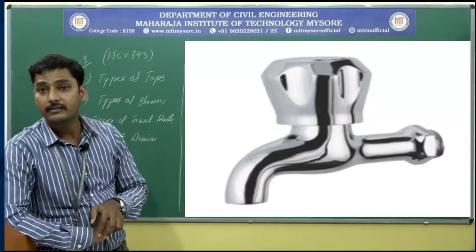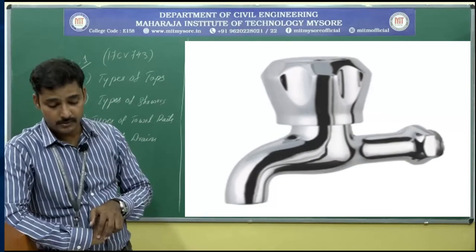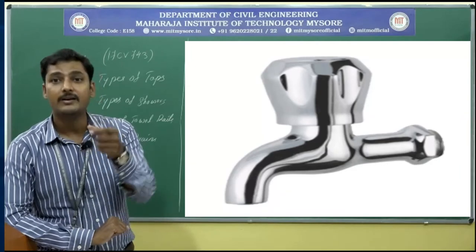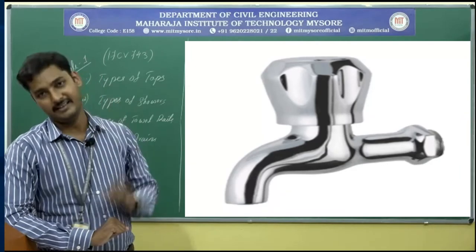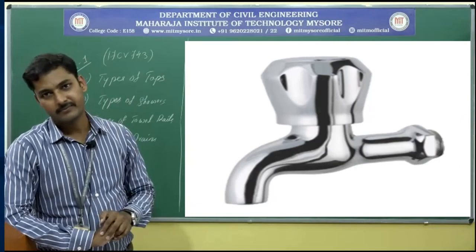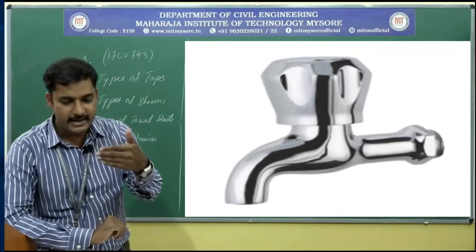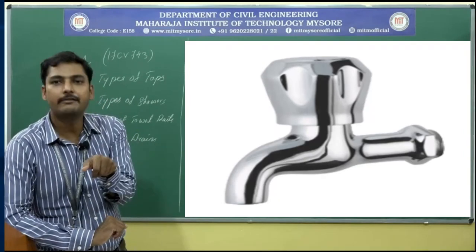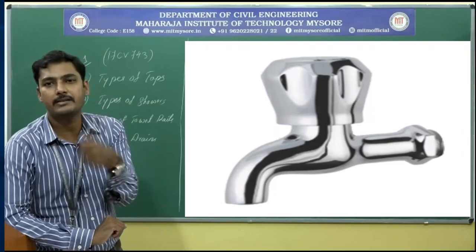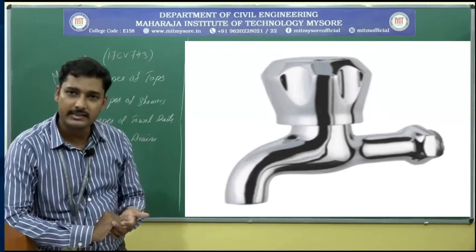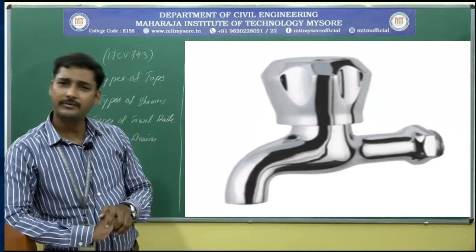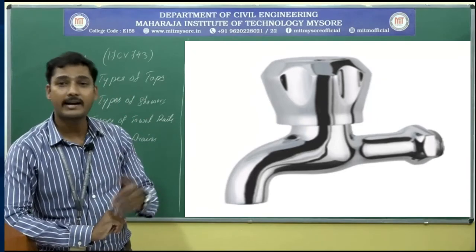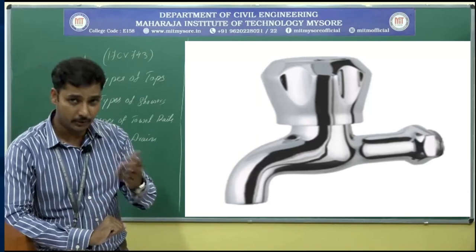The next type is half turn taps. As the name says, these require rotation of 180 degrees — exactly a straight line rotation — for the water to come out. These types of taps are preferably good for veranda portions of residential buildings or sit-out areas.